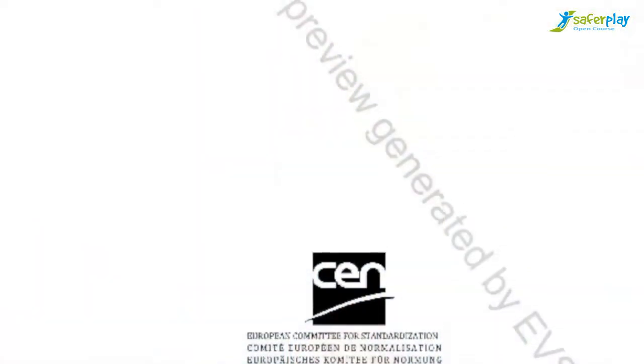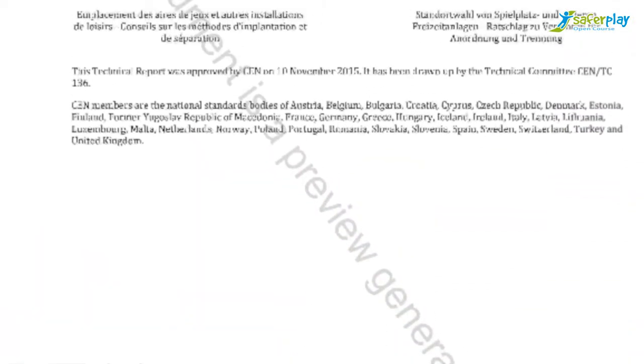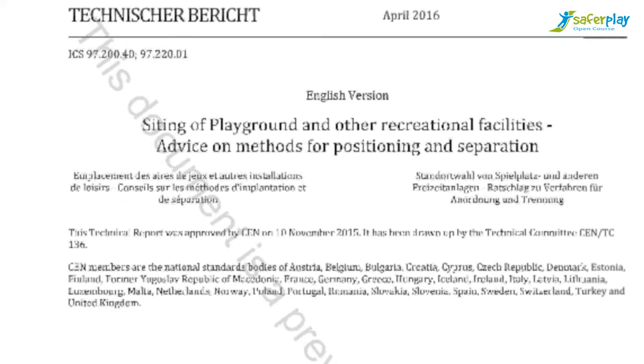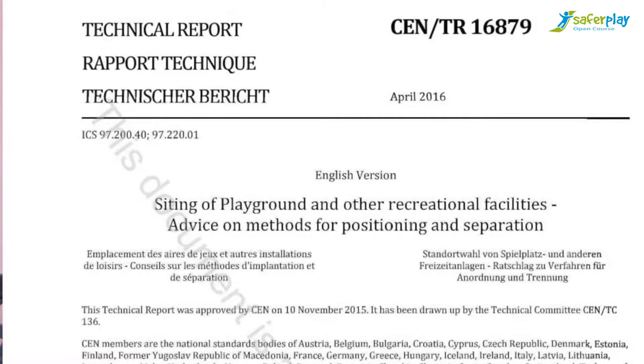There are different ways to provide for separation or boundaries when needed. The same technical report on siting of playgrounds and other recreational facilities, providing advice on methods for positioning and separation, considers four main methods: distance, natural features or landscaping, fencing and signage, or a combination of these.